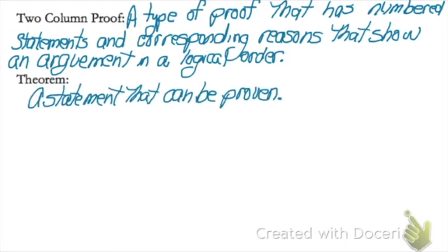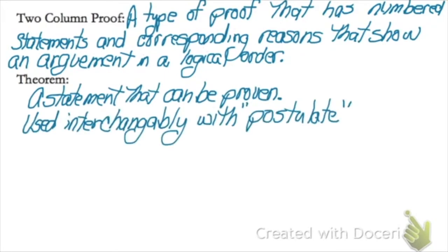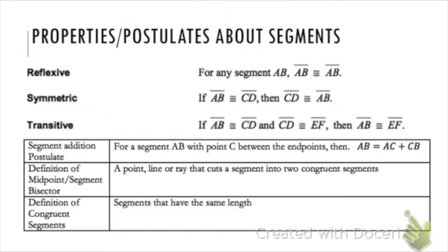We're also going to be introducing the word theorem, which means the same thing to us as postulate — a statement that can be proved. Postulate and theorem are actually different terms, but for our purposes we're going to use those interchangeably. In this unit, we are only going to do proofs that are algebraic, proofs about line segments, and proofs about angles.